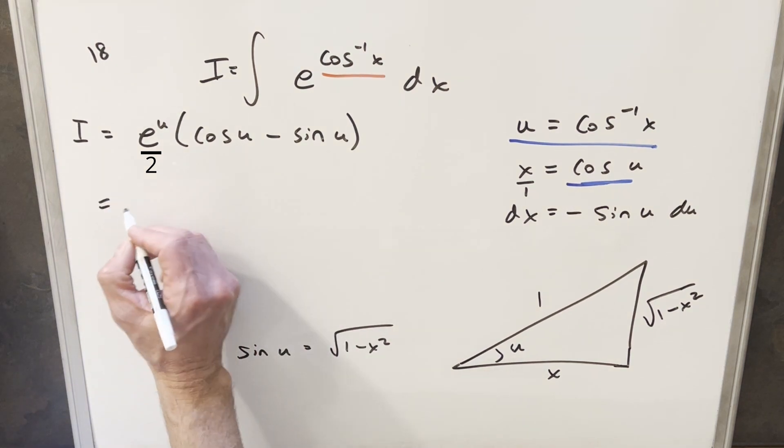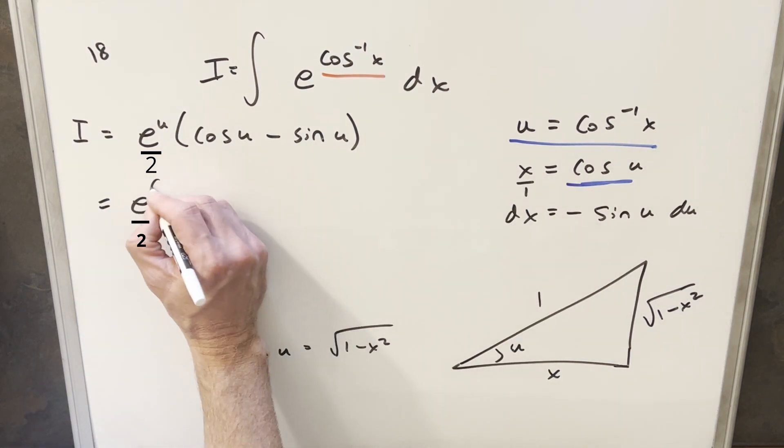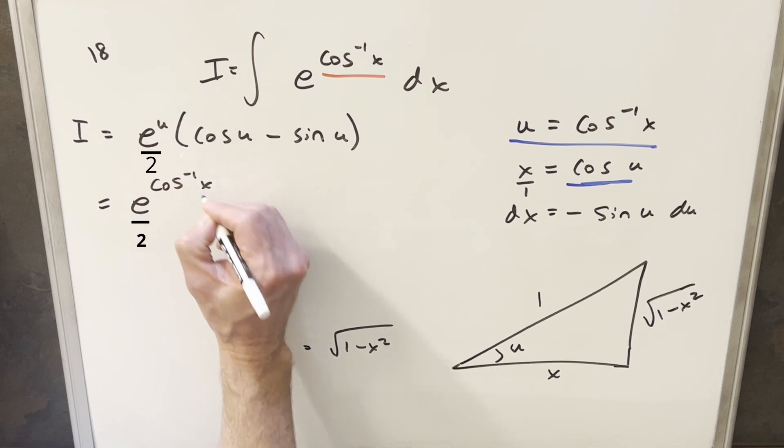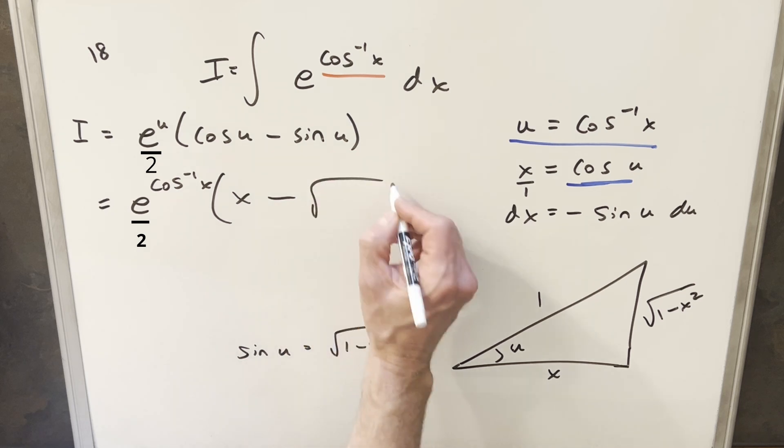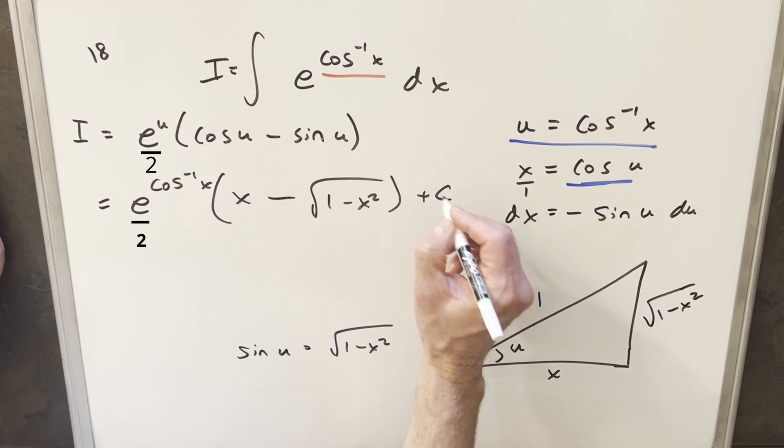So now we can go ahead and we can finish this off. So e, we have our u value is just going to be arcsin of x. Cosine of u is going to be x minus the sine value we just found, which is square root of 1 minus x squared. Add a plus c and that's it.